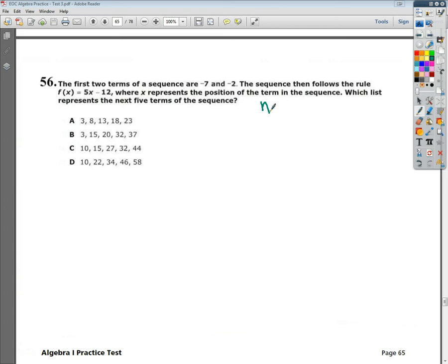Which list represents the next five terms of this sequence? So I've got negative 7 first, negative 2, and then I want 1, 2, 3, 4, 5 more. Now, it tells me that these next terms follow 5x minus 12, which means it's a linear relationship.